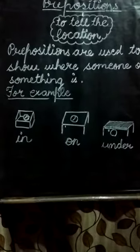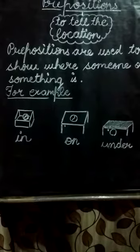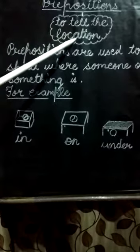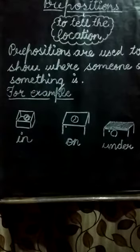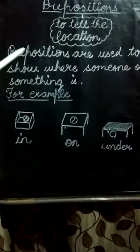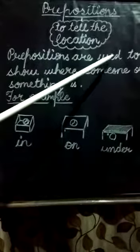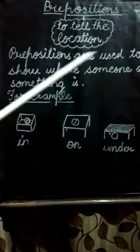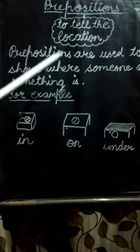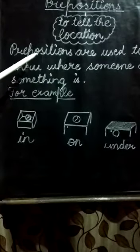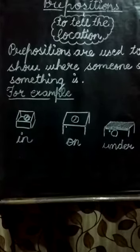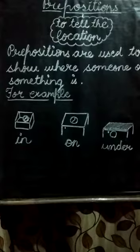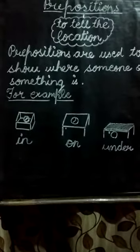Prepositions are words used to tell the location of people, animals, and things. Prepositions are used to show where someone or something is. Prepositions are words which tell us where things are situated.